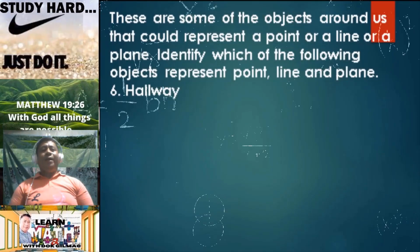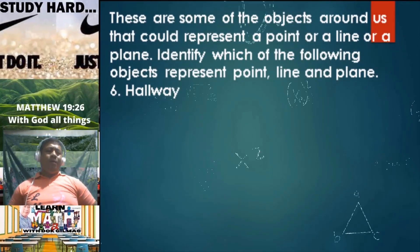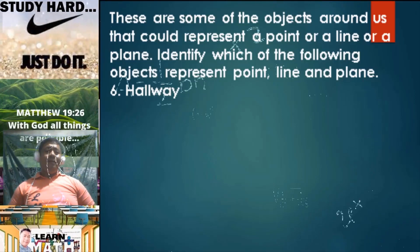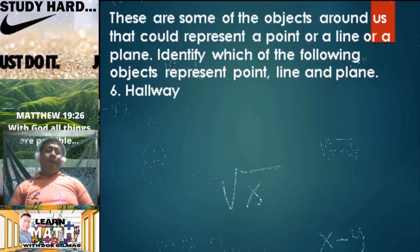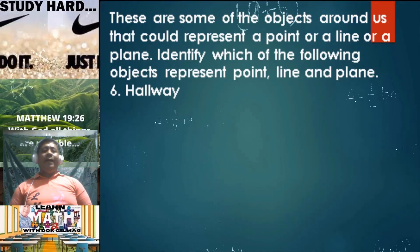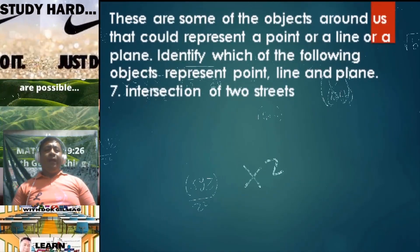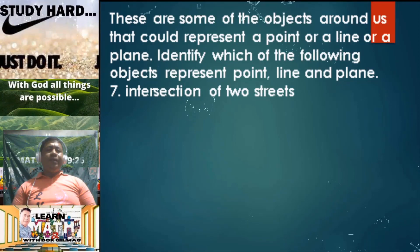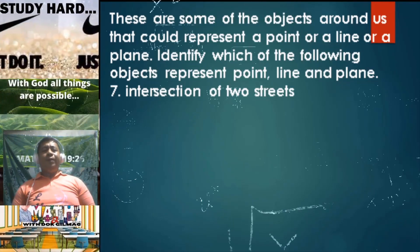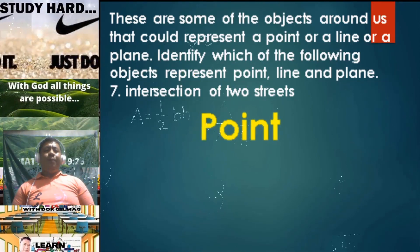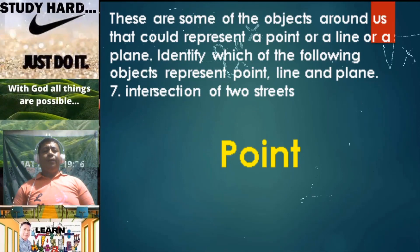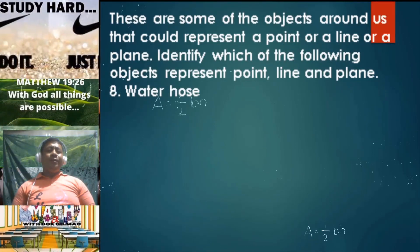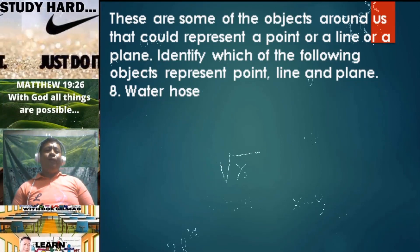Number six: hallway — if you look at a hallway, it seems like we have two parallel lines, so a hallway is simply a representation of a line. Number seven: intersection of two streets — the intersection of two streets is a representation of a point. Number eight: water hose — water hose is a representation of a line.